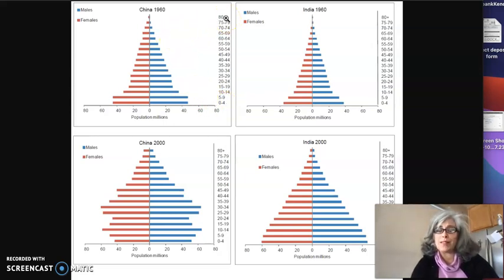So from the bottom up, you get older and from the center out, you get, in this case, it's showing millions of people in the population rather than a percentage of people in the population. You'll have to just look to see how that axis is labeled in order to know what that particular population pyramid is demonstrating.